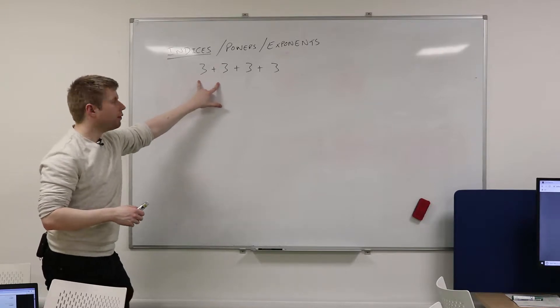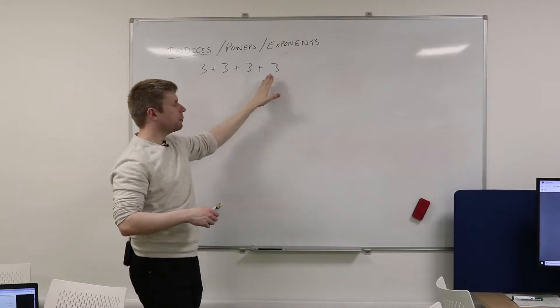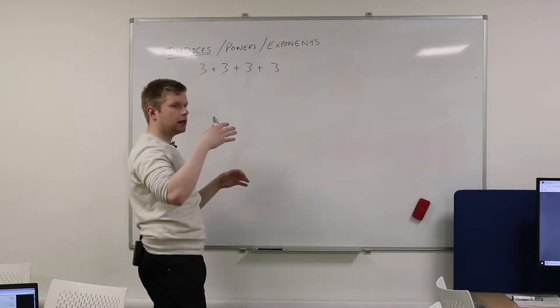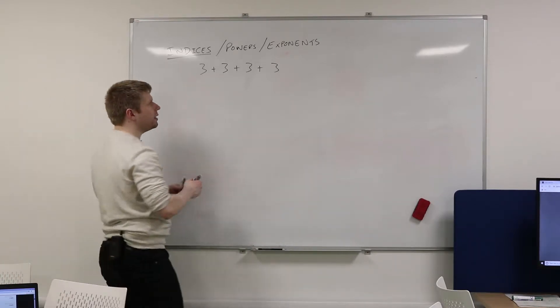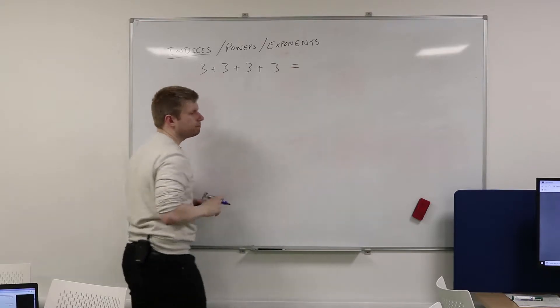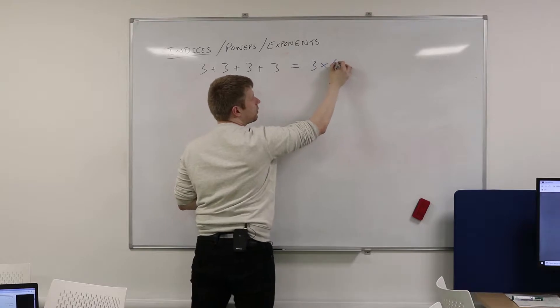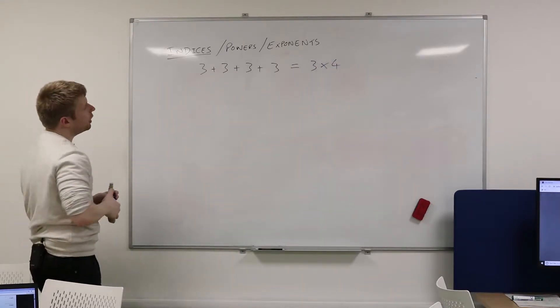Now, if I give you something like this, if I give you 3+3+3+3, are you happy that this is just repeated addition? So is there a quicker way that we can write this? 4 times 3. Exactly. I've got 3, and I'm doing it 4 times.